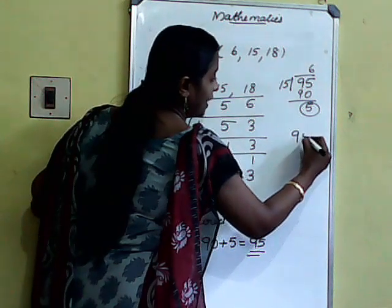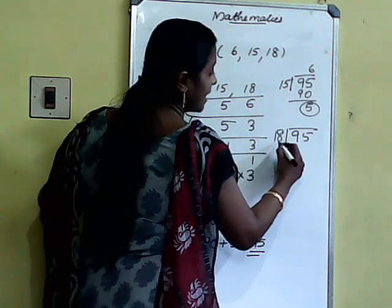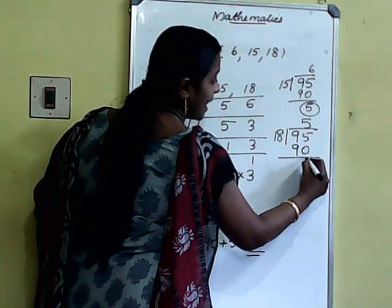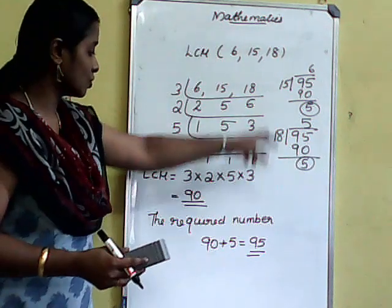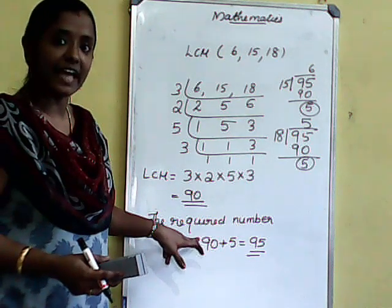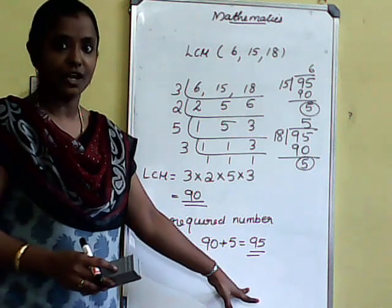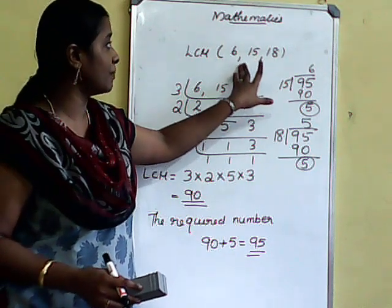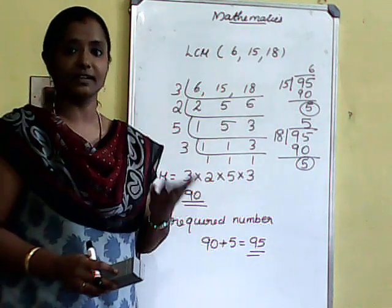95 divided by 18: 5 times 18 = 90 — again remainder 5. So the method is: first find the LCM, then add the required remainder. That number will be divisible by all three numbers, leaving 5 as the remainder.